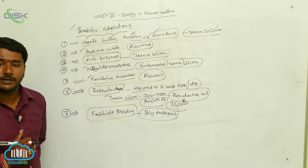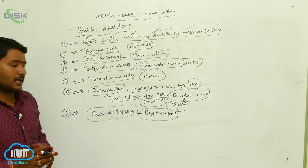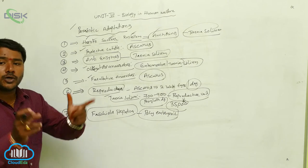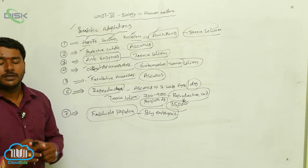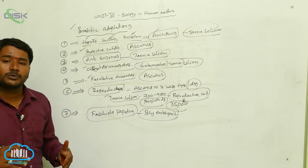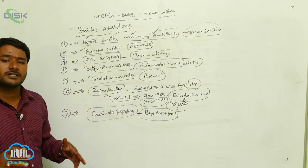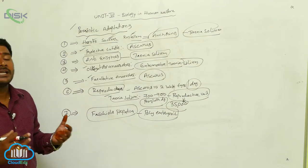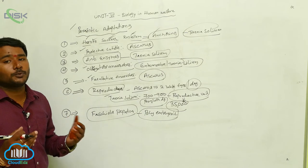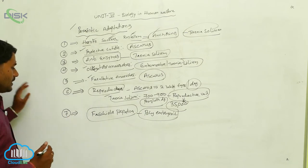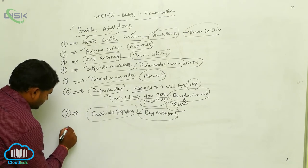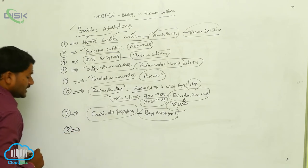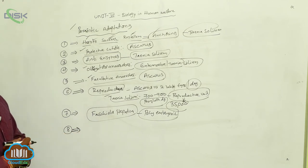Fasciola hepatica has a complex life cycle where the parasite goes into two hosts in order to improve its population. By utilizing two hosts, the parasite has a greater scope to increase its population.